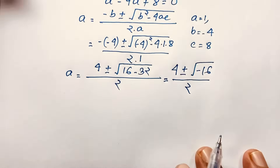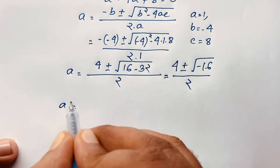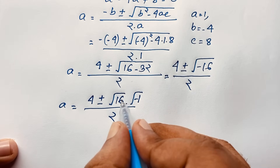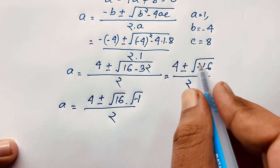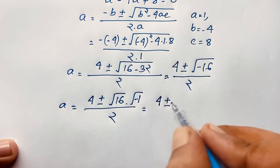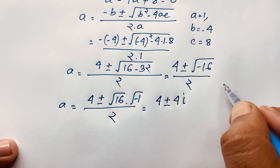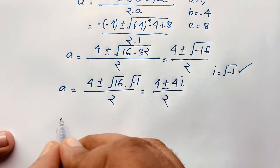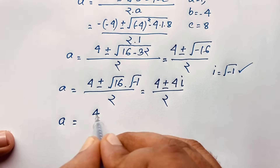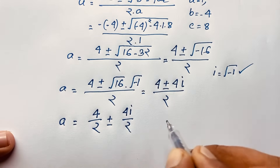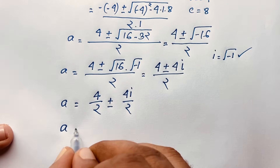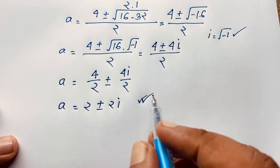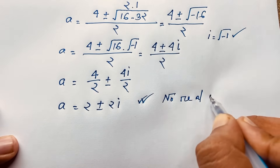So 32 minus 16 gives negative 16. Then a equals 4 plus or minus square root of 16 times square root of negative 1, over 2. Square root of 16 is 4, and square root of negative 1 is i — a complex imaginary number. So we get 4 plus or minus 4i over 2, which simplifies to a equals 2 plus or minus 2i. This is our final solution. Both are complex numbers — there is no real solution.